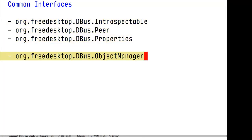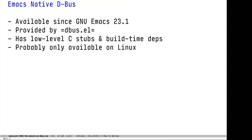Object manager is used for services that manage collections of objects. For example, the disk service has an object for each disk that's attached, and the object manager allows you to enumerate all of those. Emacs supports D-Bus natively since version 23.1 — it's a combination of native bindings with a C library and dbus.el. While there are some ports of D-Bus to non-Linux operating systems, it's probably only usable on Linux.